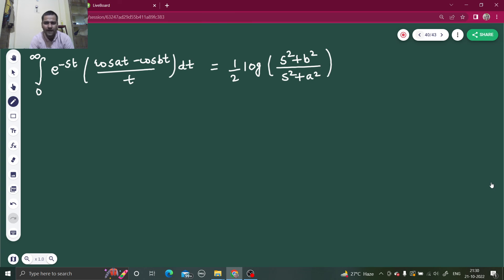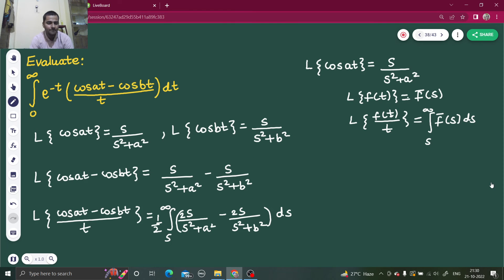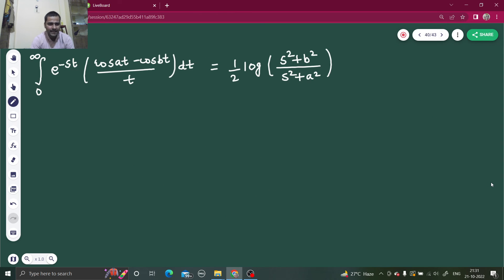So I will get half log s square plus b square divided by s square plus a square. Now what I required was e power minus t 0 to infinity. I have got in LHS e power minus t is required and here we have e power minus st. I don't want that s. So why not put that s to be equal to 1 on both the sides.